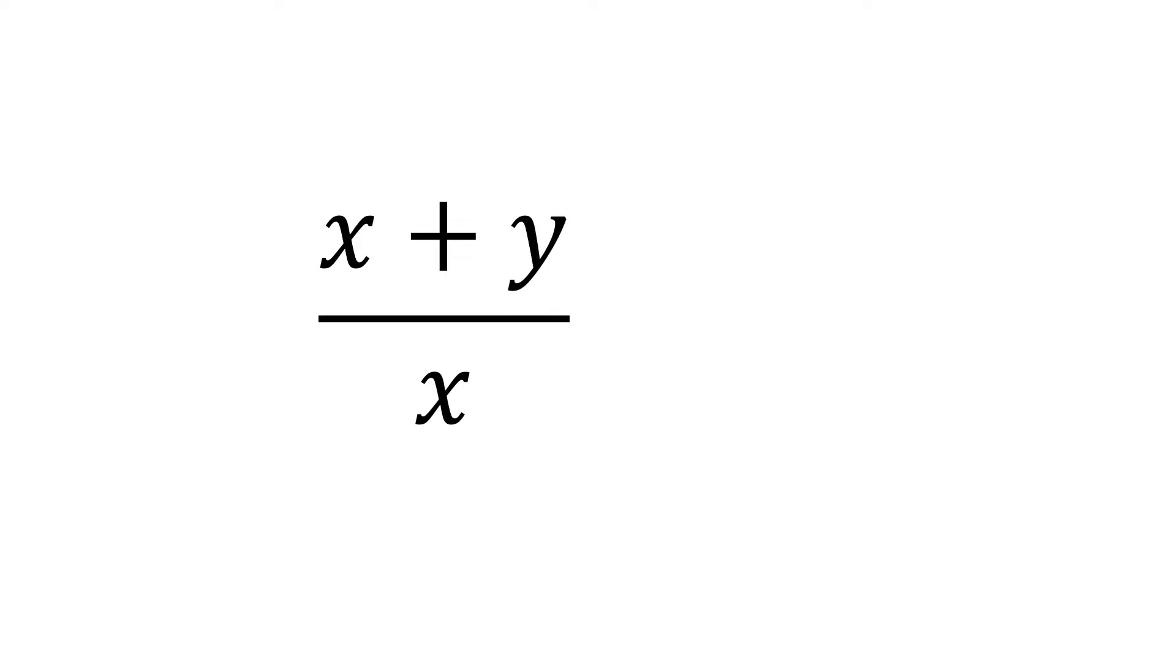Let's say we have x plus y over x. Now since there is an x in the numerator and denominator, some students will cancel the x, which simplifies to y. This is wrong. You cannot cancel x here because the operation is addition. To show this,